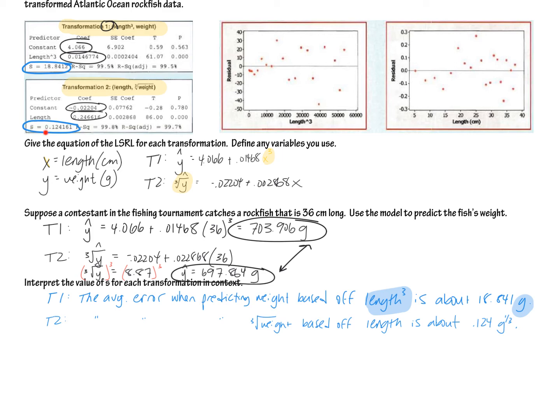For transformation two, we have a different s, and we also have different variables here that we use. So it's still the average prediction error, the average error when predicting. In this case, we predicted the cube root of weight. The y hat had a cube root around it. So it's the cube root of the weight. That needs to be the same units that we use in our transformation. So be careful about that. Based off regular length, yes, regular length is up here in this transformation, is about 0.124. It's that s number from the box right here. Grams to the one third. So be careful about your units there. We did take grams, and we took them all to the one third.